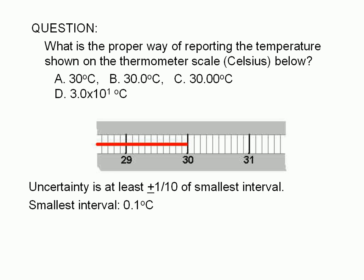The smallest interval shown on this scale is 0.1 degrees Celsius. For example, this is the 30.1 degree mark, and the next mark is the 30.2 degree mark.